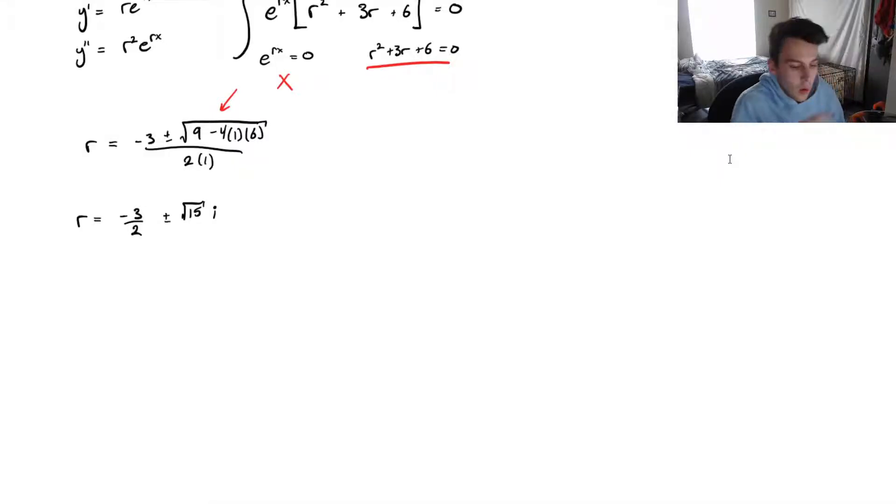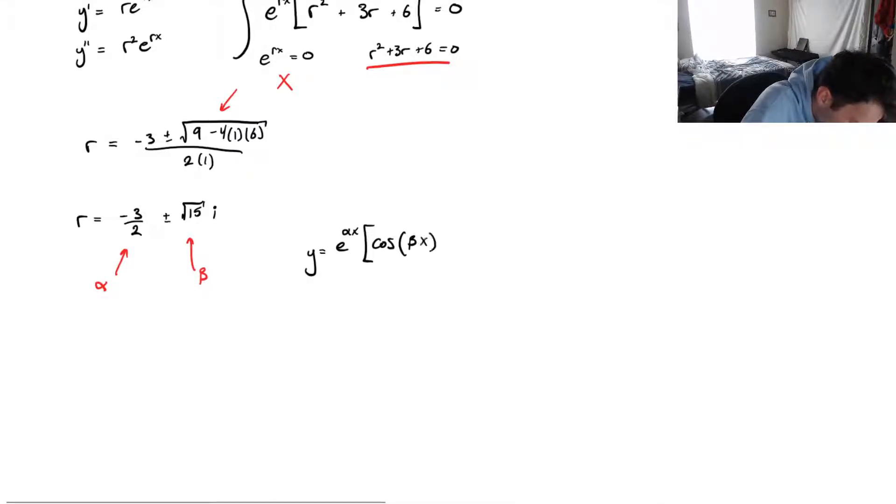And if you'll remember, what we found out in the last video is that we know our solution will take the form of, and I'll write it out in a second, but we had those two constants, alpha and beta. And if you remember, this first unit here is our alpha, and this second number there is our beta. And what we found was that the solution takes the form of y equals e to the alpha x, and this is multiplied by cosine of beta x plus sine of beta times x.